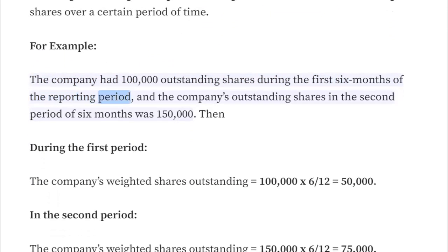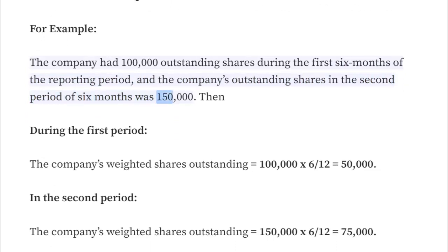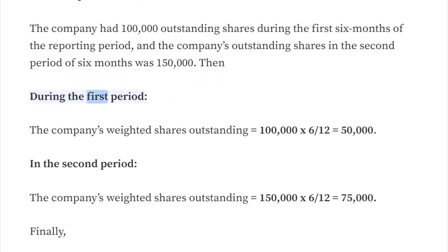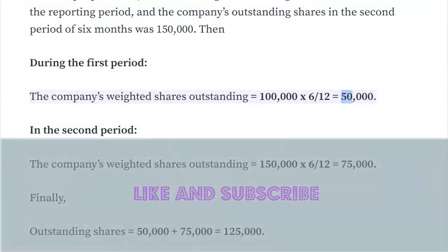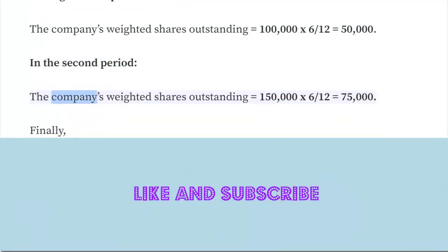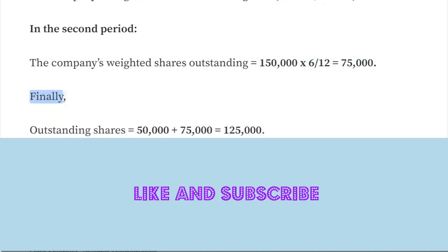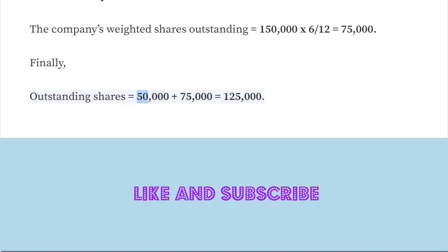For example, if the company had 100,000 outstanding shares during the first six months of the reporting period, and 150,000 outstanding shares during the second six months, then the weighted shares outstanding for the first period equals 100,000 × 6/12 = 50,000, and for the second period equals 150,000 × 6/12 = 75,000. Finally, total outstanding shares equals 50,000 plus 75,000.